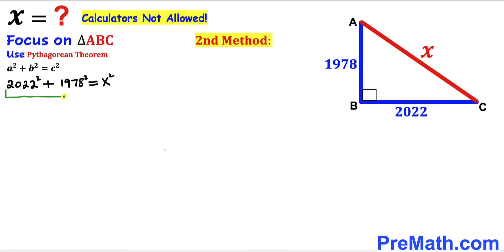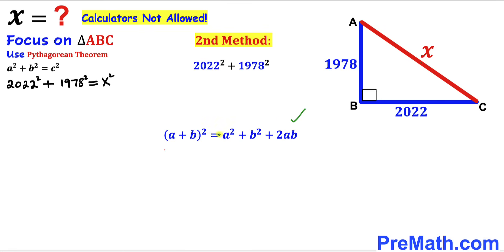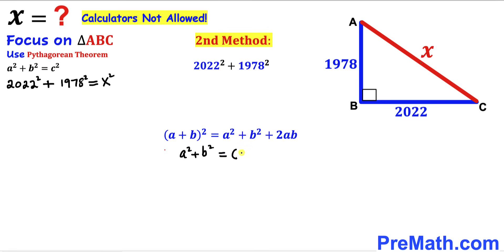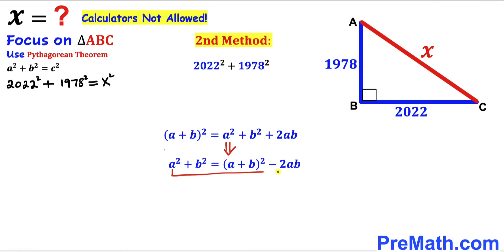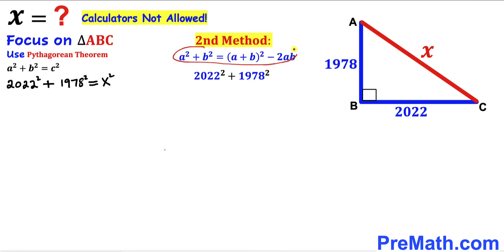Let's focus again on the left-hand side. Recall the identity (A + B)² = A² + B² + 2AB, which can be rearranged to give A² + B² = (A + B)² − 2AB. We are going to apply this identity to our expression, where A = 2022 and B = 1978.